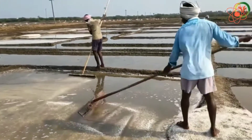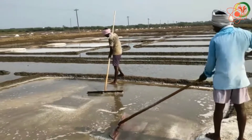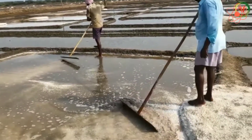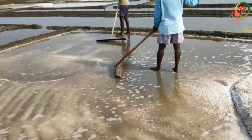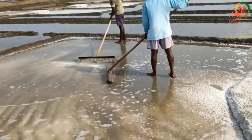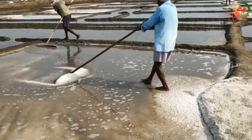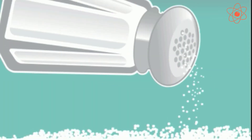Sea water contains a mixture of salts. It is allowed to stand in shallow pits for a few days. Water evaporates and changes into vapour by the heat of the sun, and the salt is left behind. The salt thus obtained is further purified to get the common salt that we use every day.